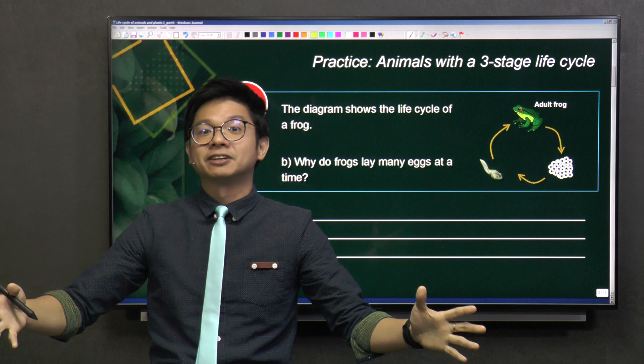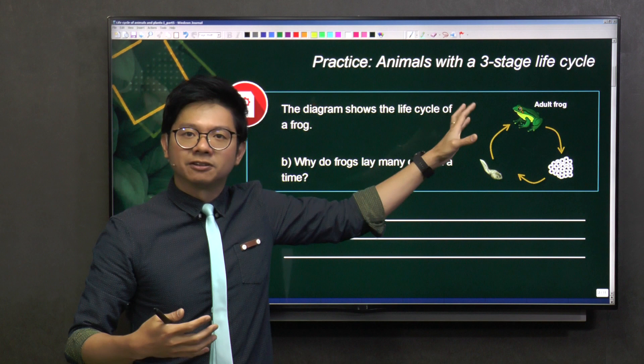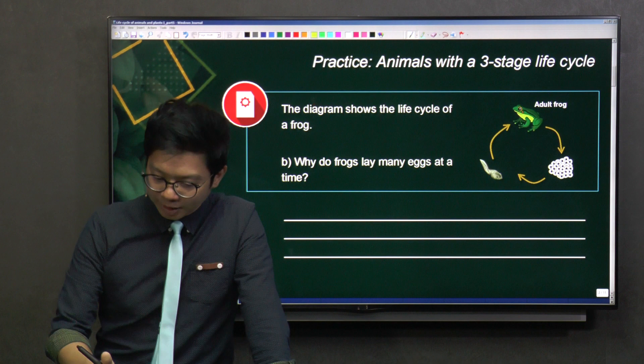They have to lay many eggs. So when they lay many eggs, some eggs will be eaten, some eggs might not survive, but there will be some eggs that can survive. So that is their way to ensure that the frog population will not go into extinction.